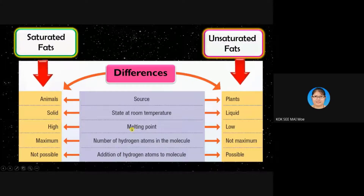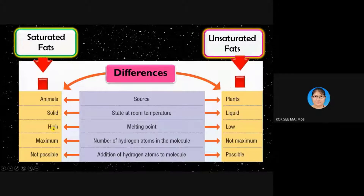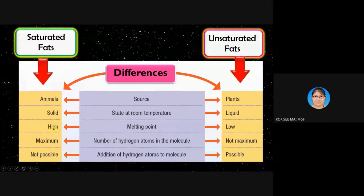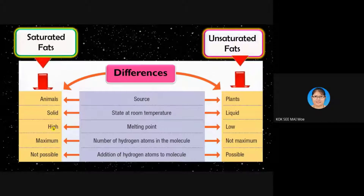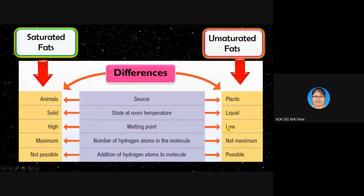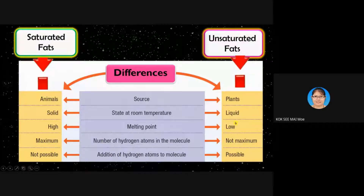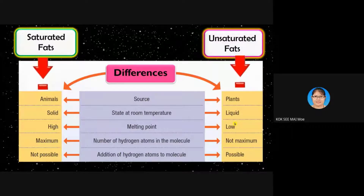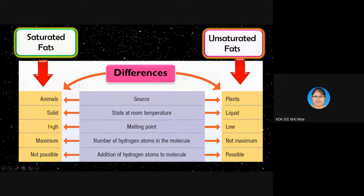How about the melting point? The melting point for saturated fat is high because it is solid, meaning it takes more time to melt. For unsaturated fat — from plants — the melting point is low, so it melts faster. That means in your body, it's easier to melt unsaturated fat compared to saturated fat.